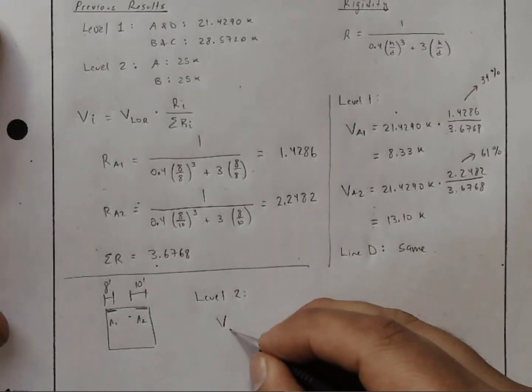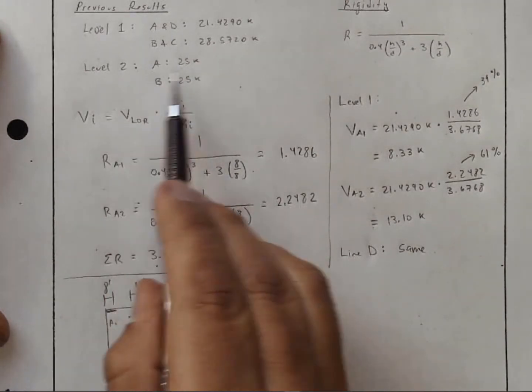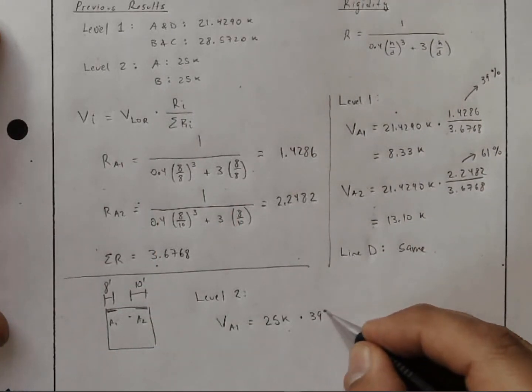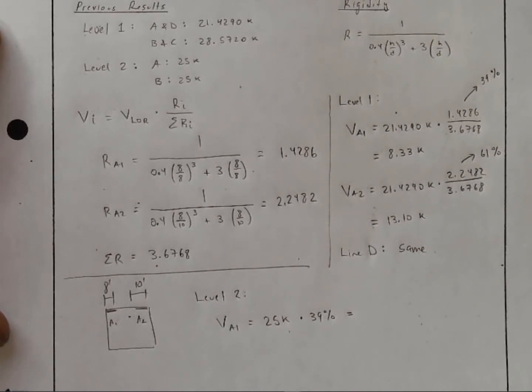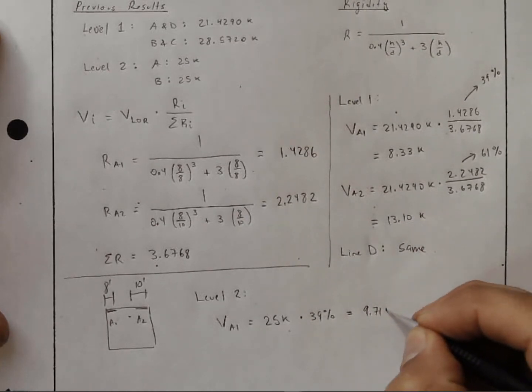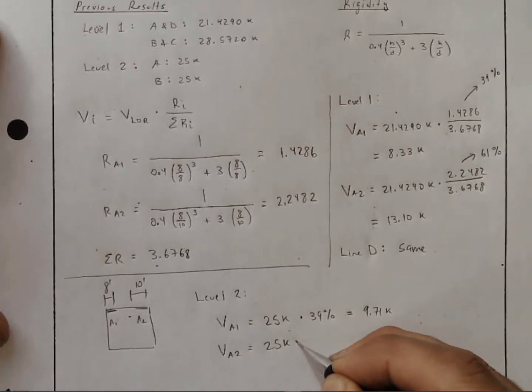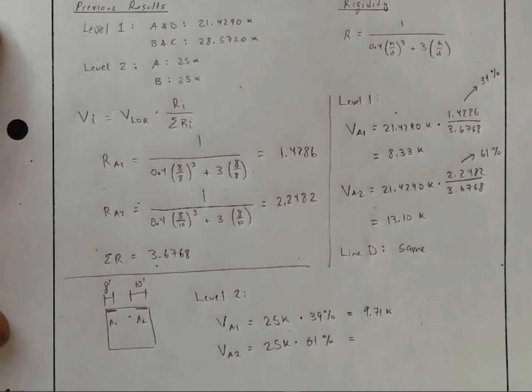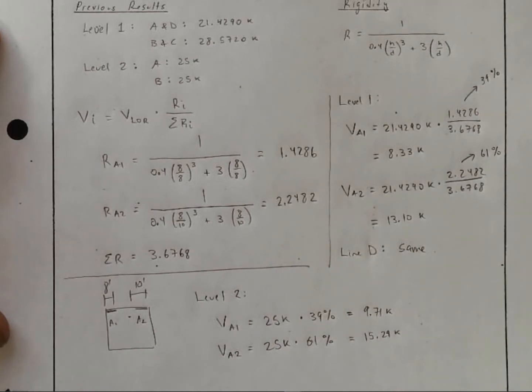So for level 2, the shear in A1 is going to be equal to now 25 kips. Where do these 25 kips come from? Right here. The shear in level 2 on line A is 25 kips times 39%, which is the ratio that we calculated here. And of course I would keep more decimals, so 39% isn't the number that I would plug into the calculator. Once I do that, I get 9.71 kips. Similarly, the shear in A2 is equal to 25 kips times the ratio of 61%. Again, 61% not being the number I plug into the calculator. Here I would plug in more accuracy. 15.29 kips. And so we have what we need.